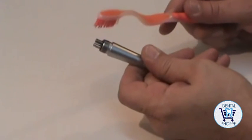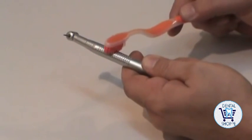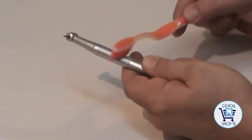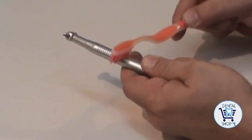A toothbrush and hot soapy water can be used to clean the hand piece threads and handle knurls. The hand piece exterior can also be washed with a germicidal detergent or cleaner.